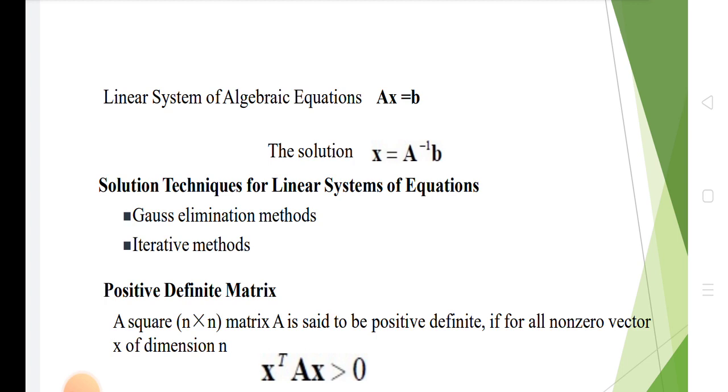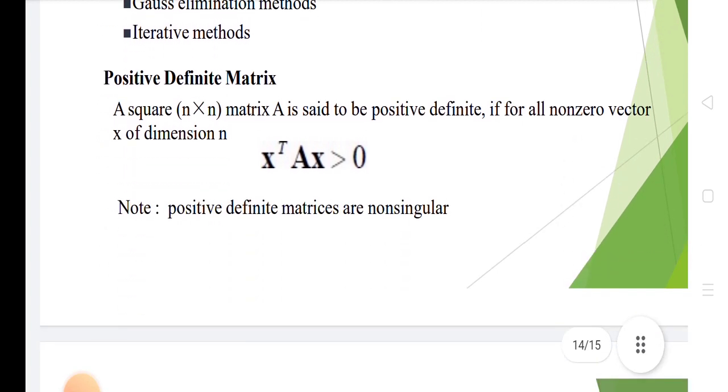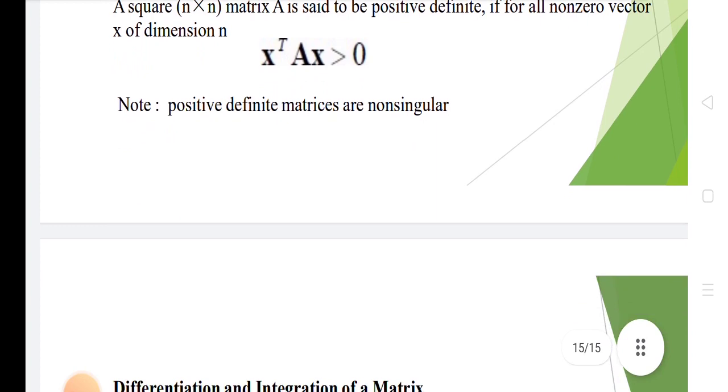Positive definite matrix: A square n into n matrix A is said to be positive definite if for all nonzero vector x of dimension n, x transpose Ax is greater than zero. Note: positive definite matrices are non-singular.